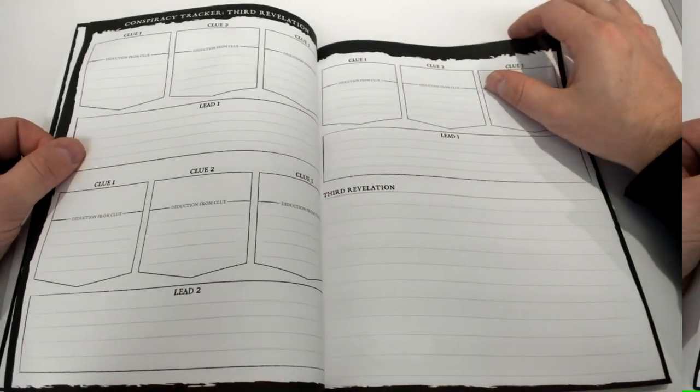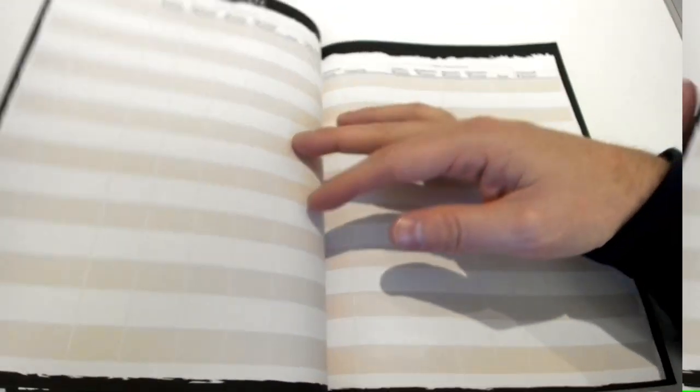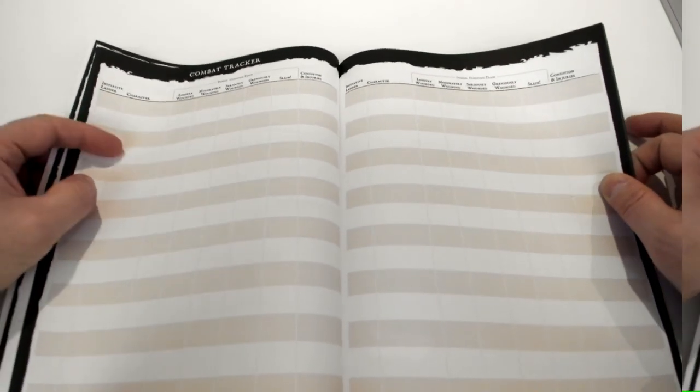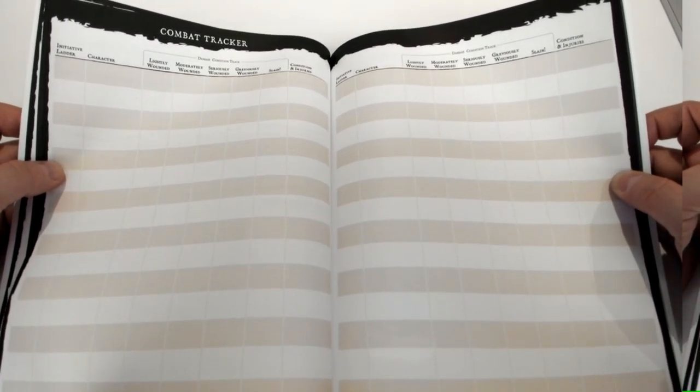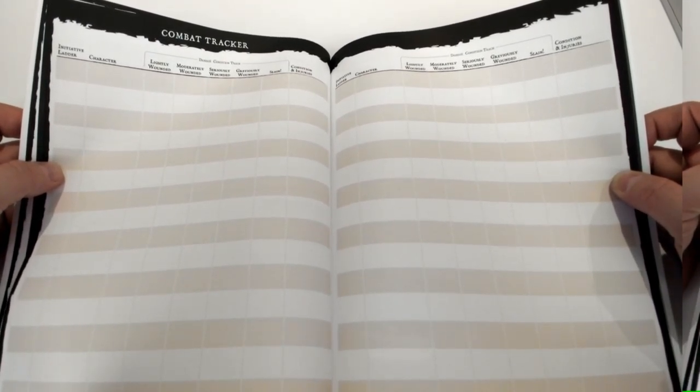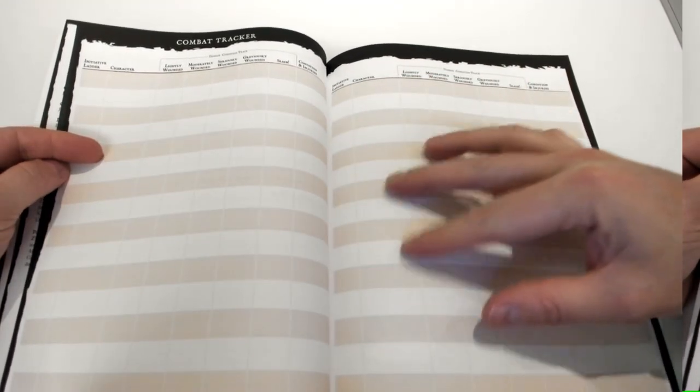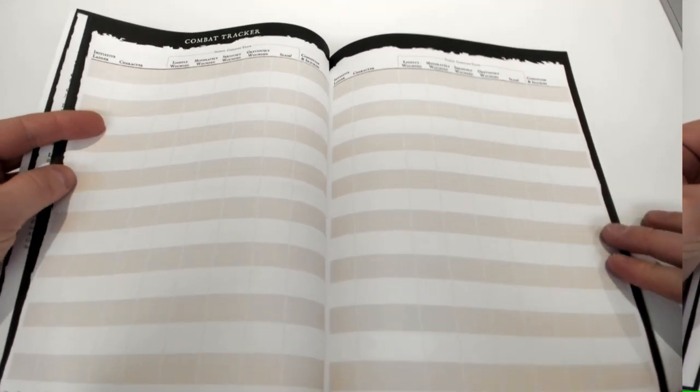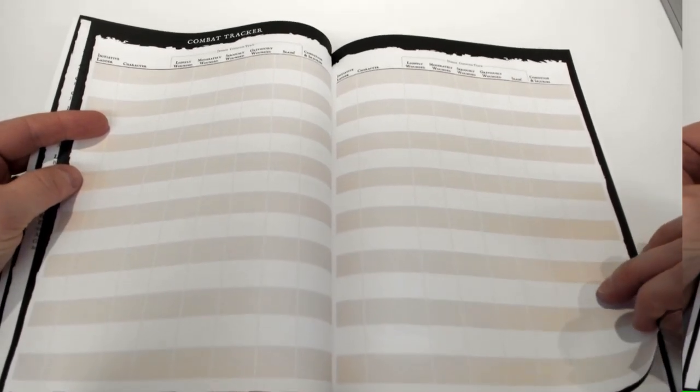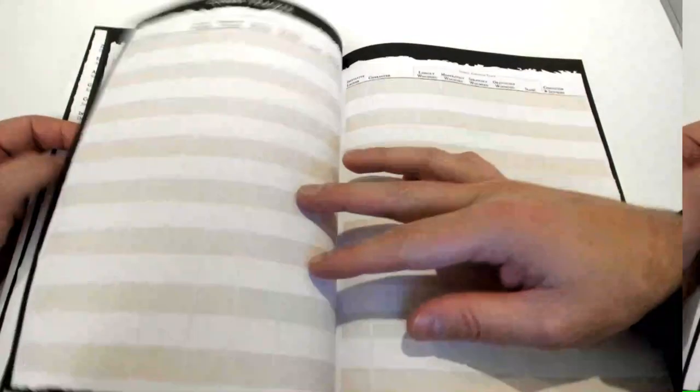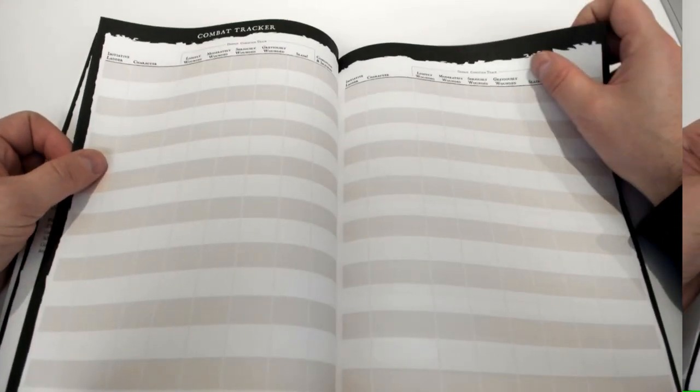Moving on, we then move on to combat trackers. You can see you have your initiative ladder, your characters, their current damage condition track, condition and injuries. You can use this to basically put in all of your NPCs or foes to track within here, or even the player characters if you really wanted to track everything that's happening in the game. But this is intended for you to basically track all of your NPCs, their current conditions and whatnot.